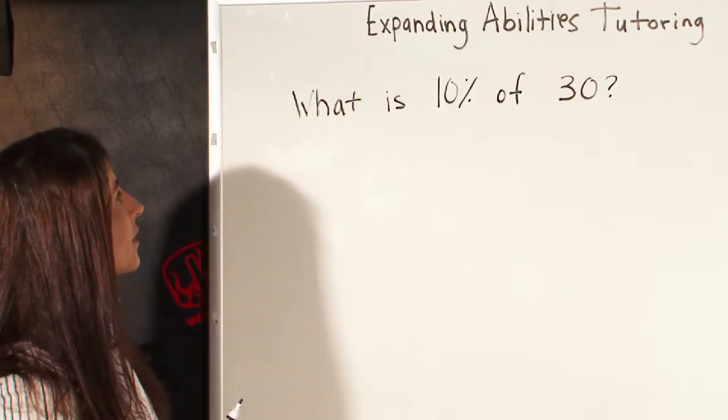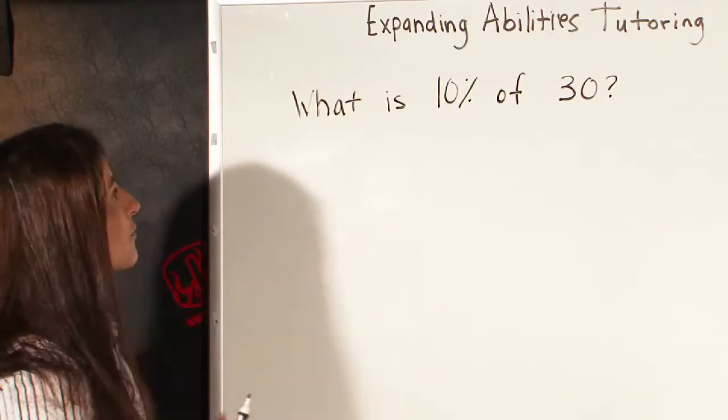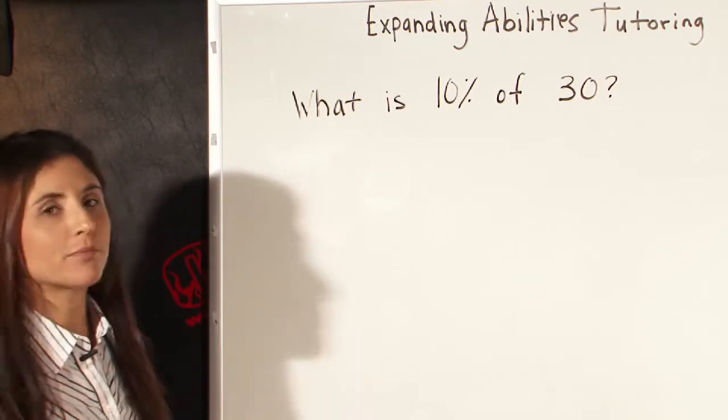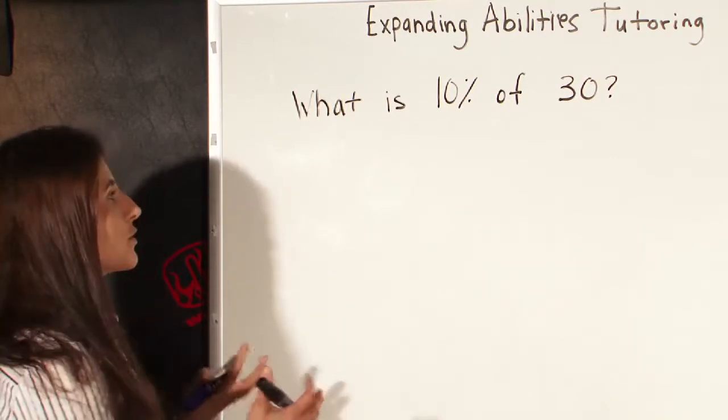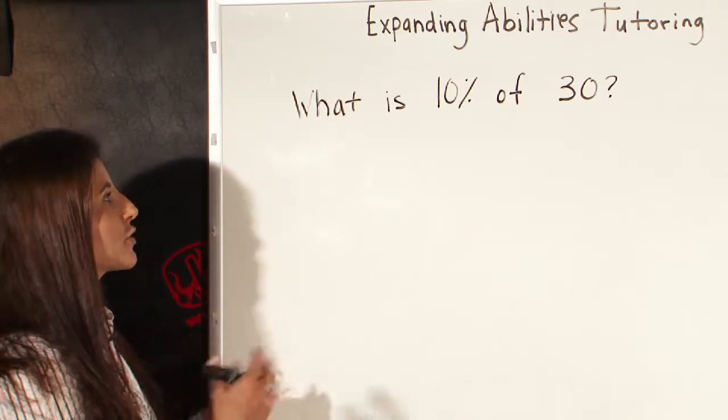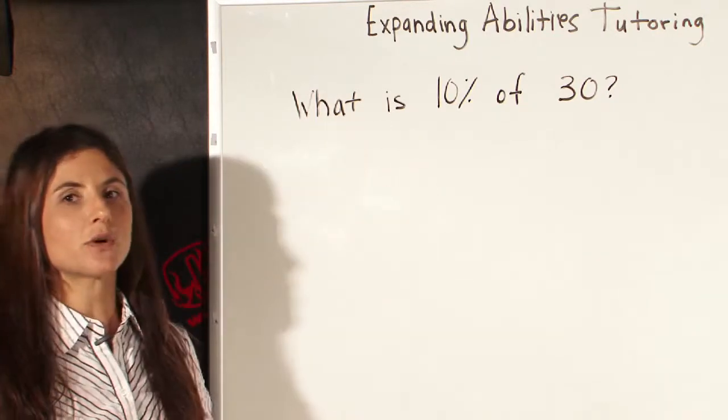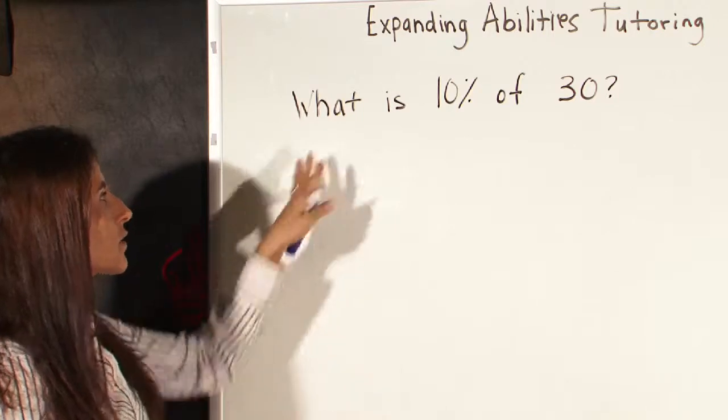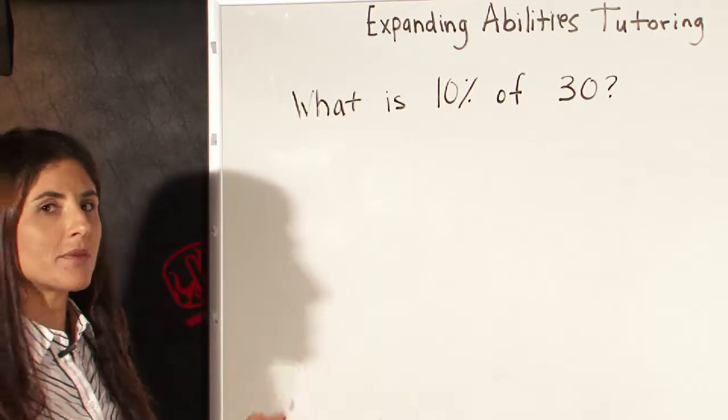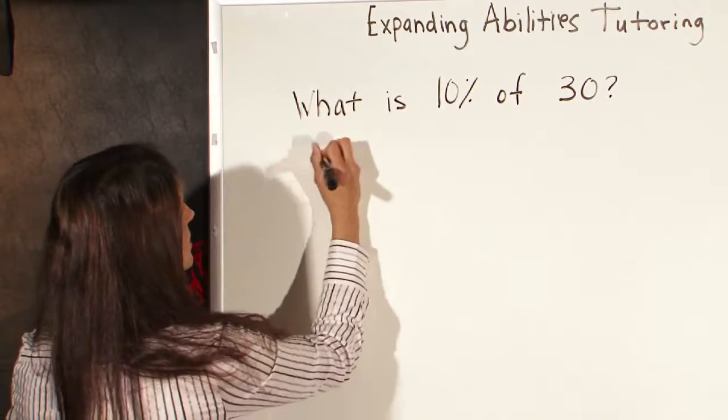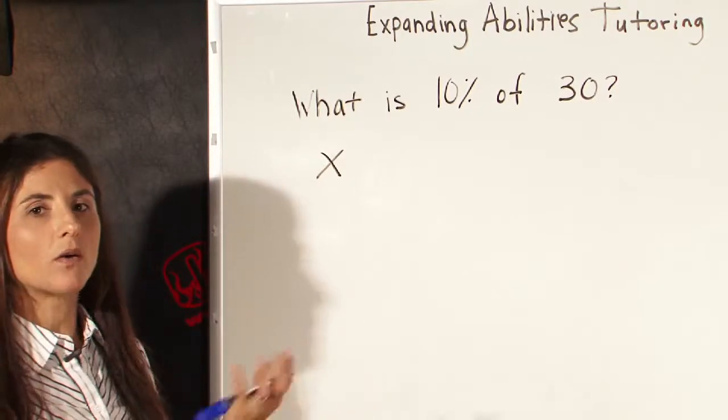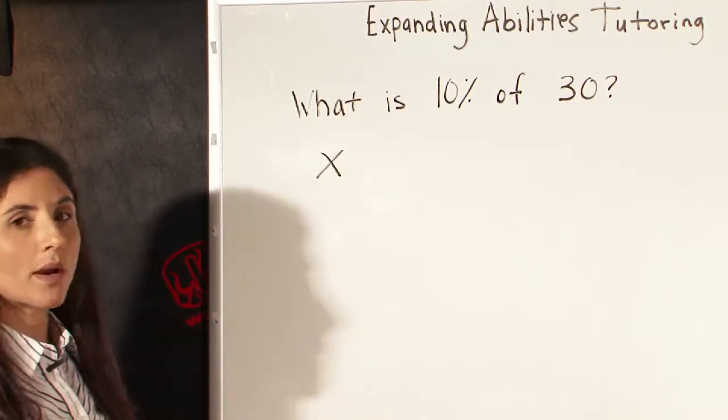The first case here is a question like I've written on the board. It says, what is 10% of 30? So when you're doing a problem like this, it's important to interpret the language into a mathematical equation. Whenever it says what, that basically means x. That's your unknown, so our unknown is going to be x.